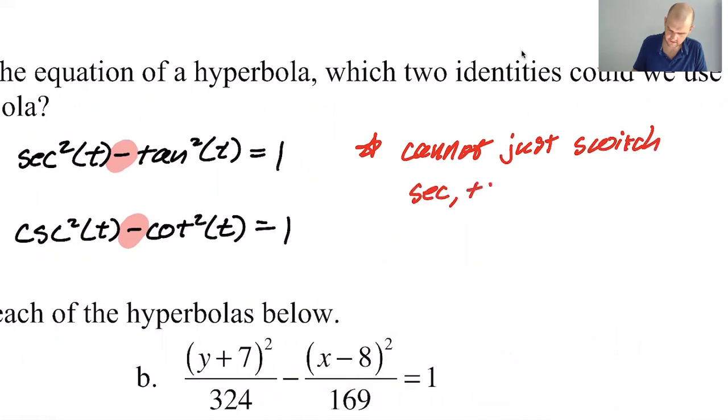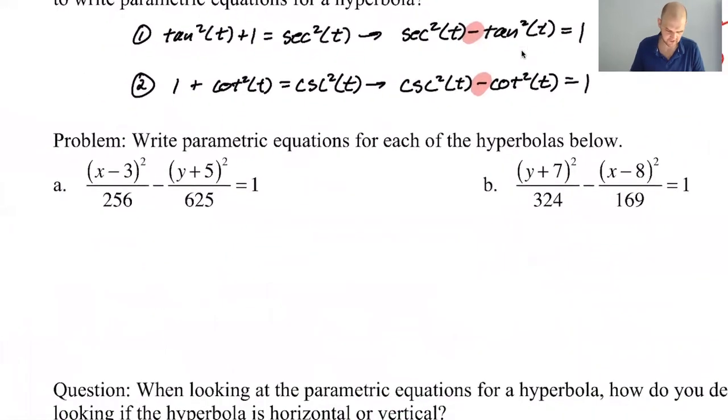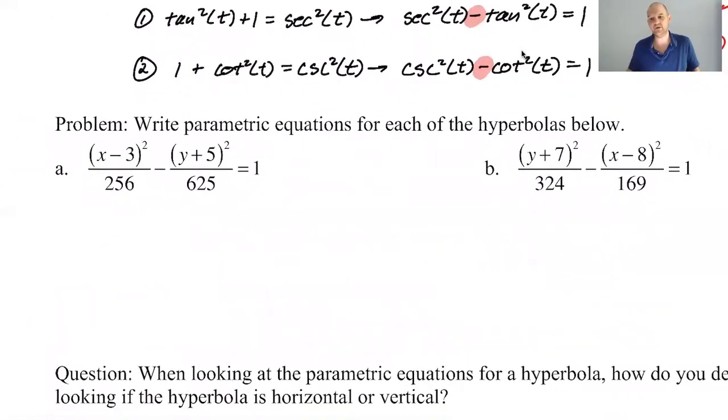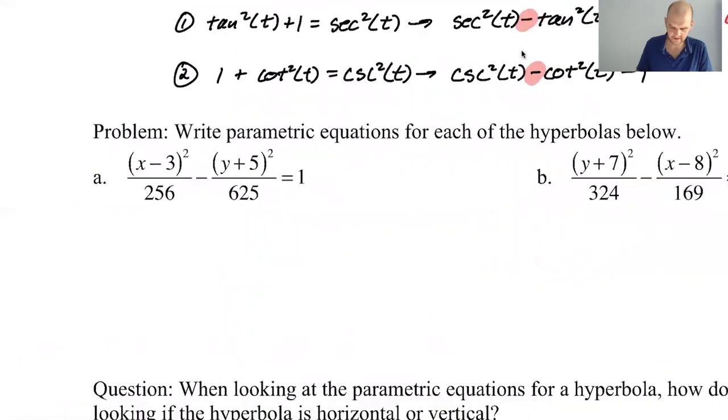You can't just swap secant of t and tan of t. You have to use the co-functions. You can say secant squared minus tan squared, or you could swap for co-functions, say cosecant squared minus cotan squared, but you can't switch the secant and the tan. I'm kind of the opinion that if you choose on your own to use cosecant and cotan, you're kind of a monster. Secant tan is the way to go. It was some kind of karmic thing right there. All right, so let's see if we can do this.